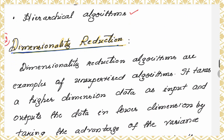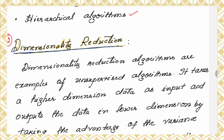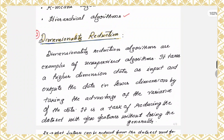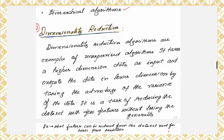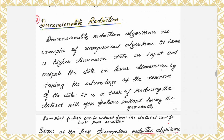The next type under unsupervised learning is dimensionality reduction. Dimensionality reduction algorithms are examples of unsupervised algorithms. They take higher-dimension data as input and output the data in lower dimensions. By taking advantage of the variance of the data, it is a task of reducing the dataset to fewer features without losing generality. The algorithm takes data with more number of features and reduces it to a lower dimension, removing all unwanted features.